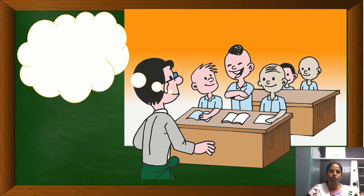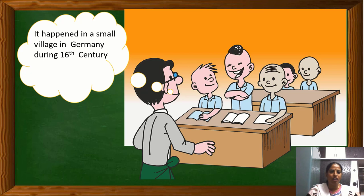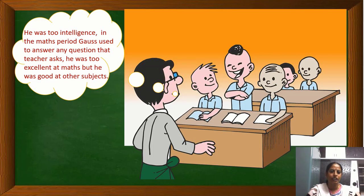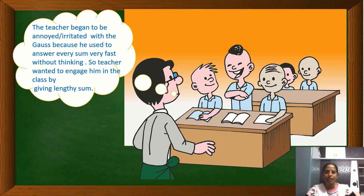I am telling you a true story. It happened in a small village in Germany during the 16th century. It is an old story about a child called Gauss. When Gauss was still at primary school, this happened. He was too intelligent. In the math period, Gauss used to answer any question the teacher asked.